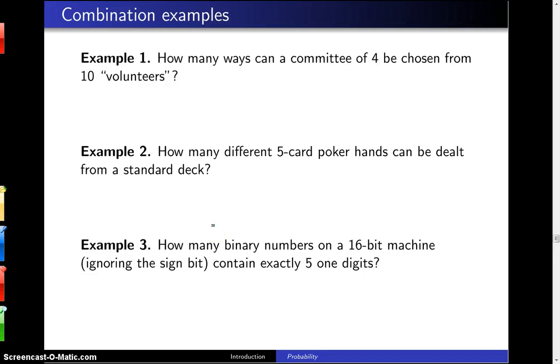So the question here is, how many ways can a committee of four be chosen from ten volunteers? The key word which I've underlined here is committee, because the fact that it's a committee and you're not choosing different positions like president, vice president, secretary, and treasurer, that means that the order is not important with which you pick the four people.